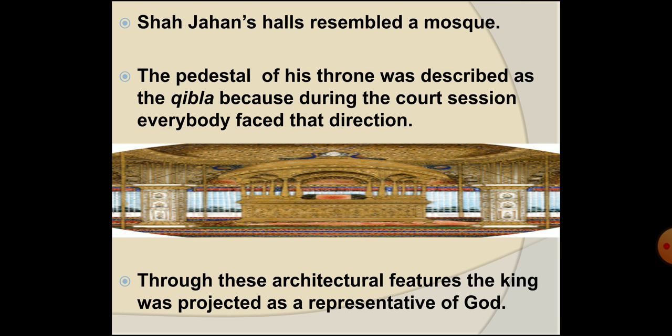The audience halls or courts that Shah Jahan built were special in the sense that they resembled a mosque. The pedestal or base of Shah Jahan's throne was often described as the qibla. The qibla is the direction towards which Muslims face while doing prayer or namaz. It was termed qibla because during the sessions of Shah Jahan's court, everybody faced that direction only.